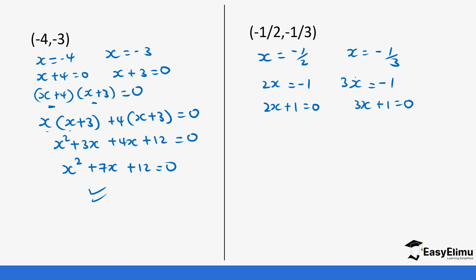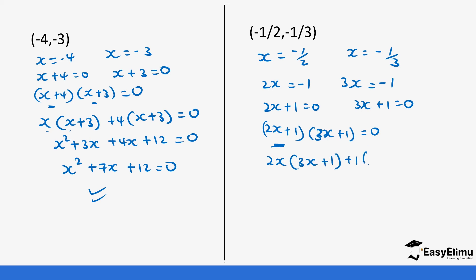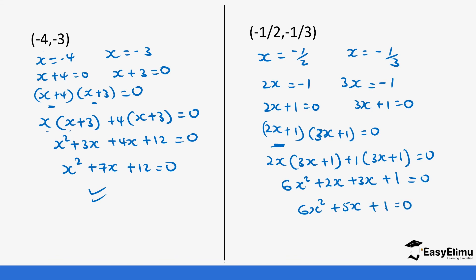I just took the -1 to the other side and it became +1. So I will expand using this expression: 2x(3x + 1) + 1(3x + 1) = 0. This gives 6x² + 2x + 3x + 1, so 6x² + 5x + 1 = 0. And that is your answer.